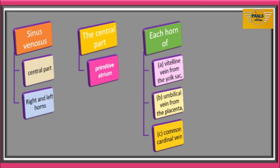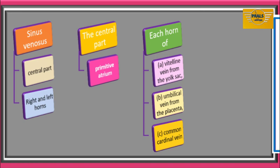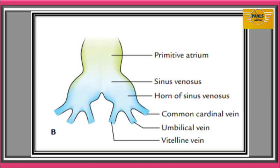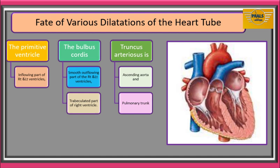The sinus venosus forms the venous end of the primitive heart tube. It consists of three parts: the central part, and the right and left horns. The central part communicates with the primitive atrium and the two horns. The right and left horns represent the unfused lower part of the two heart tubes. Each horn of the sinus venosus receives three primitive veins: the vitelline vein from the yolk sac, the umbilical vein from the placenta, and the common cardinal vein.